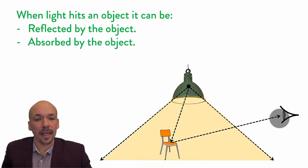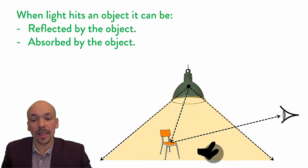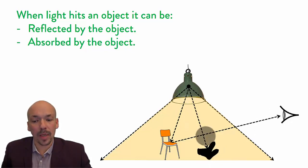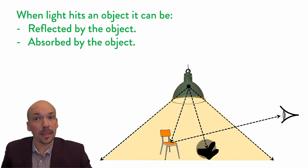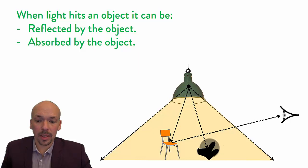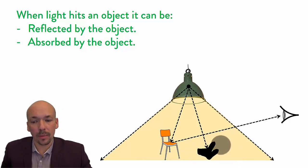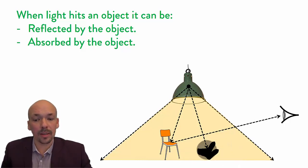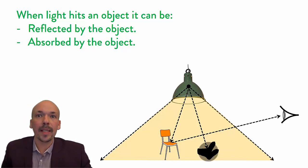A second thing that can happen is that light can be absorbed. For instance, if you have very black socks lying here, light will hit them and be absorbed — no light will be reflected. You will still be able to see the socks because the surrounding light is reflected, and you notice that in the middle there is no light reflected. That is when you see the black socks. Black is actually the absence of light.